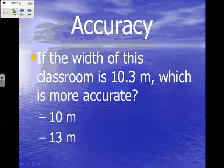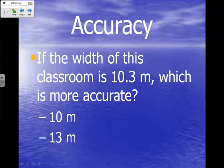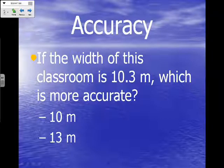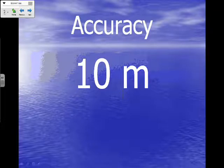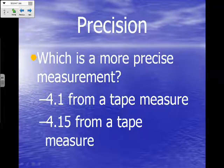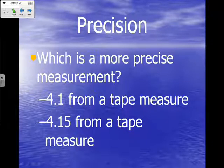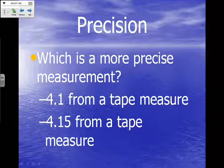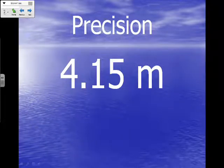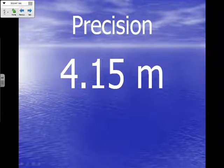Let's do some practice questions. If the width of this classroom is 10.3 meters, which is more accurate: 10 meters or 13 meters? The answer is 10 meters, because it's closest to the true value of 10.3. Which is a more precise measurement: 4.1 from a tape measure or 4.15? The answer is 4.15 meters — it's the most precise because it's the most exact. The farther you go past the decimal place, the more exact you are.